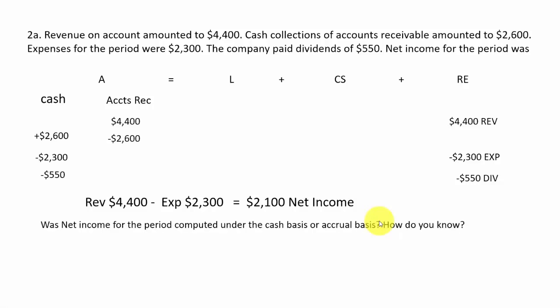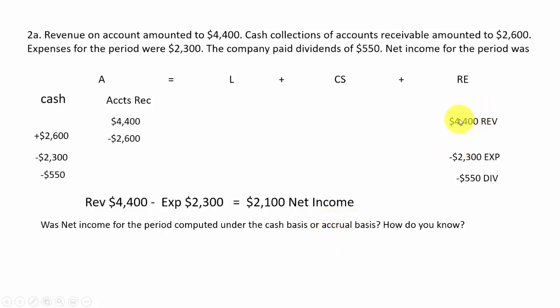Was net income computed under a cash basis or accrual basis? We should know we're under the accrual basis of income because we were counting accounts receivable as revenue. Under the accrual basis, as soon as you earn the revenue you can record it no matter when you receive the money. You can record revenue as soon as you earn it, as soon as you've done the work — so you increase revenue and increase accounts receivable. It doesn't matter when you get the money.